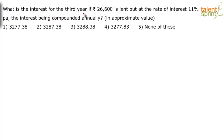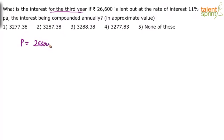The question asks: what is the interest for the third year if 26600 is lent out at the rate of 11% per annum, the interest being compounded annually? An approximate value is requested. The principal given is 26600 and the rate of interest is 11% per annum.